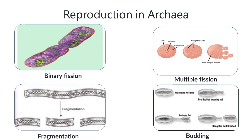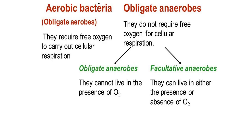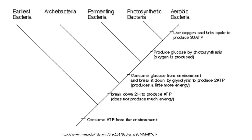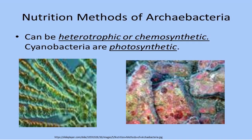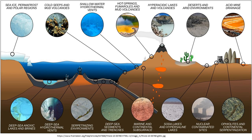Archaeobacteria are just as diverse physiologically. They can be aerobic, facultatively anaerobic, or strictly anaerobic. Nutritionally, they range from chemo-litho-autotrophs to organotrophs. Some are mesophiles, others are hyperthermophiles that can grow above 100 degrees centigrade. Archaeobacteria are often found in extreme aquatic and terrestrial habitats — often in anaerobic, hypersaline, or high-temperature environments.